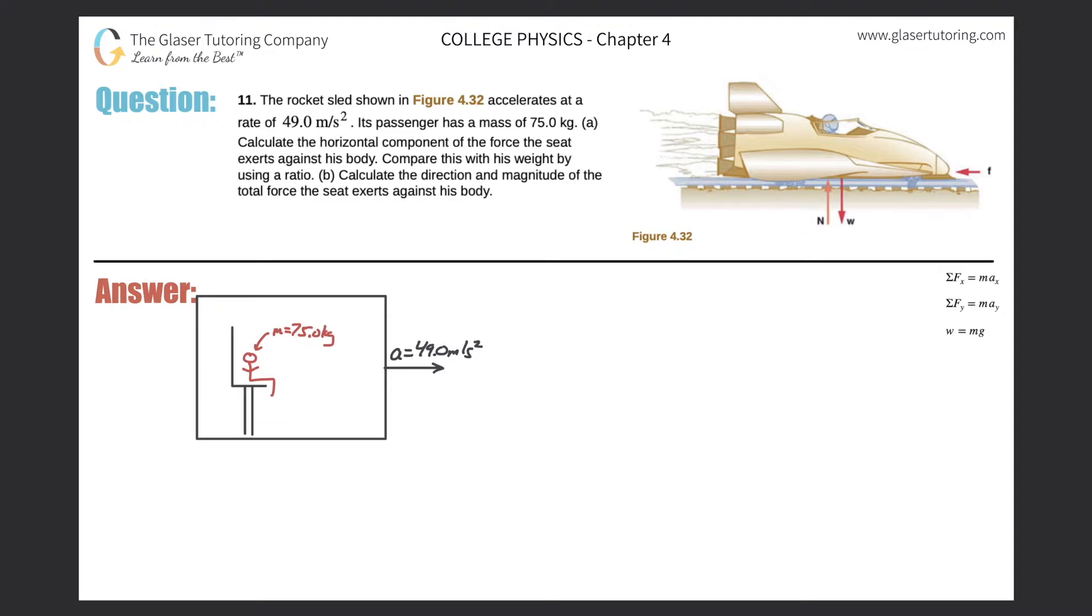Number 11. The rocket sled shown in figure 4.32 accelerates at a rate of 49 meters per second squared. Its passenger has a mass of 75 kilograms. Letter A. Calculate the horizontal component of the force the seat exerts against his body. Compare this with his weight by using a ratio.